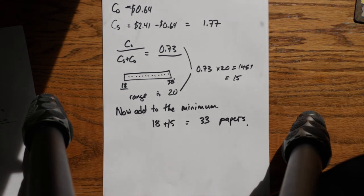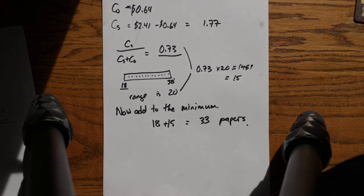It doesn't mean you're going to sell 33 every time. It doesn't mean you're going to equalize what you're over or under. What it does is it equalizes the cost of being short or being long.